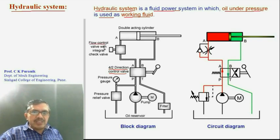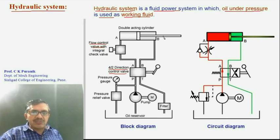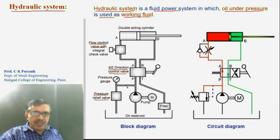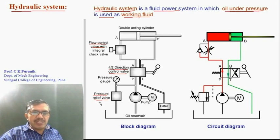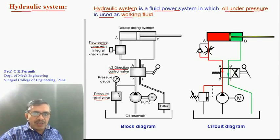There is a flow control valve, which regulates the rate of flow of oil going into the cylinder so that the speed of extension of the cylinder can be controlled. There is also a pressure relief valve, which is a safety valve that safeguards system components against high pressure. The pressure relief valve is set for maximum pressure in the system. If the pressure exceeds that maximum, the valve will open and release oil back to the tank.